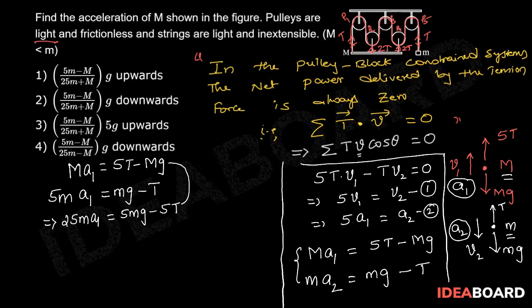Now, adding these two equations, we get A1 times capital M plus 25M equal to 5MG minus capital MG. So, on rearranging,